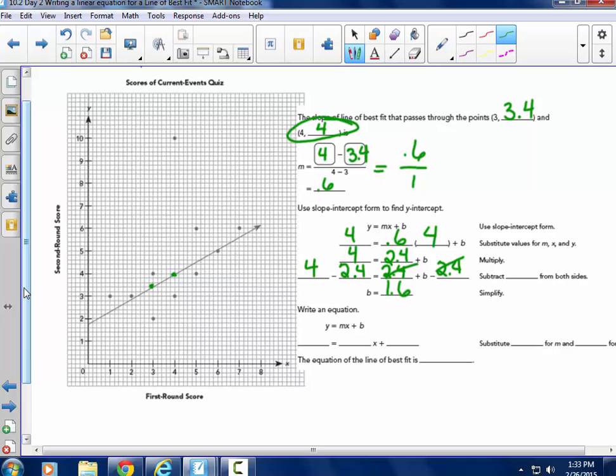And I get 4 minus 2.4 would be a B of 1.6. So my equation now, putting in that slope and that Y intercept, is Y equals my slope of 0.6 times X plus my intercept B, 1.6. So the equation for the line of best fit is Y equals 0.6X plus 1.6.